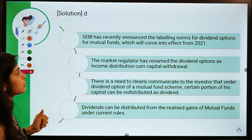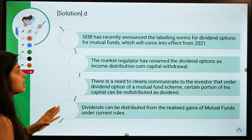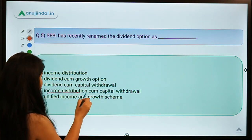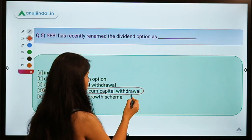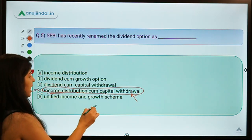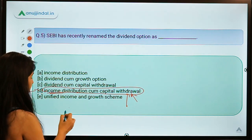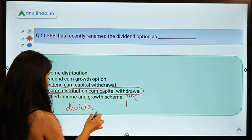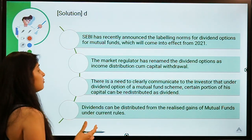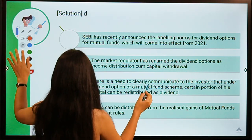SEBI has come out with a new rule according to which options previously called dividend options will have to be called Income Distribution cum Capital Withdrawal. The name change ensures investors properly understand that income is going to be distributed and capital is going to be withdrawn whenever money is given back to unit holders in the form of dividend. The main reason SEBI did this is to provide more transparency to investors so they make a more informed and aware decision before putting money into a scheme.